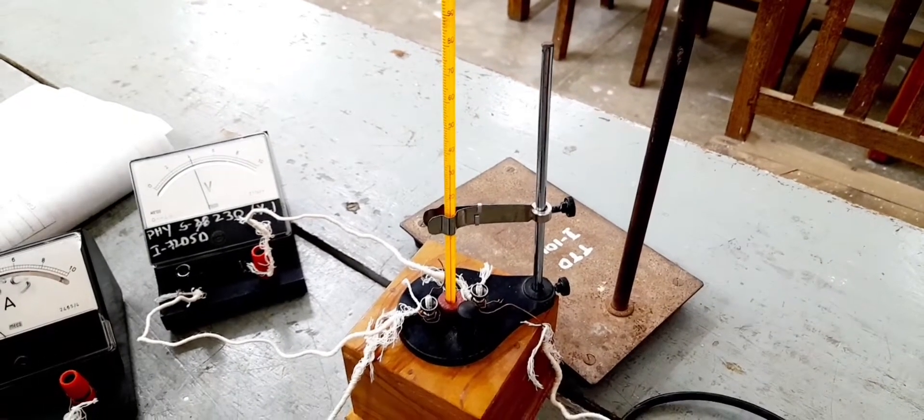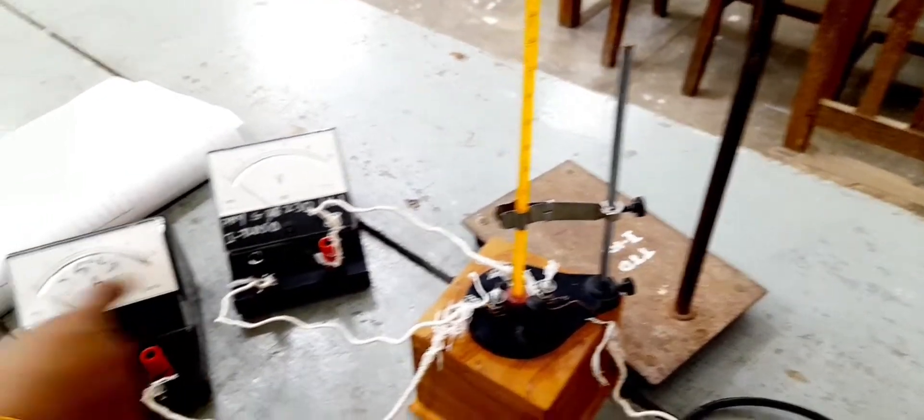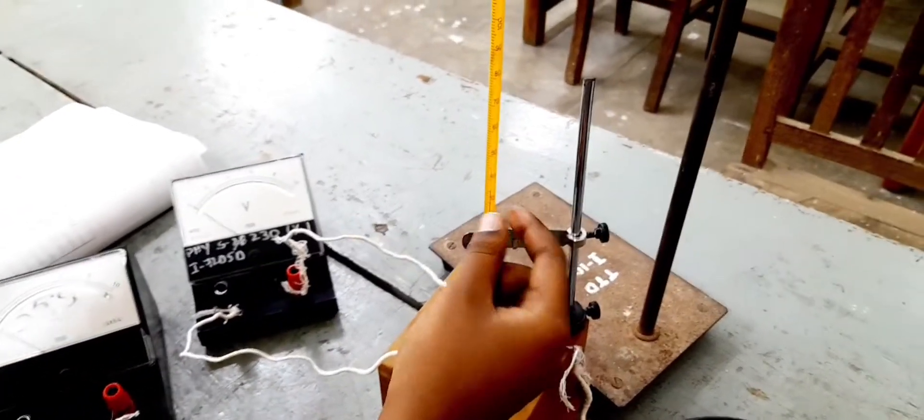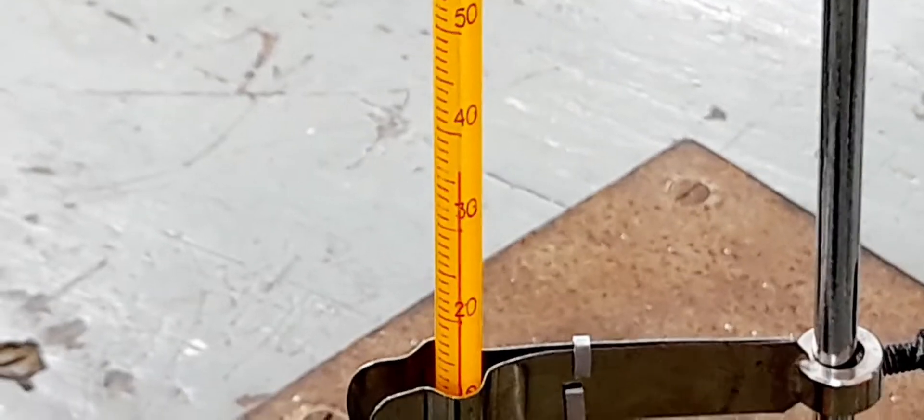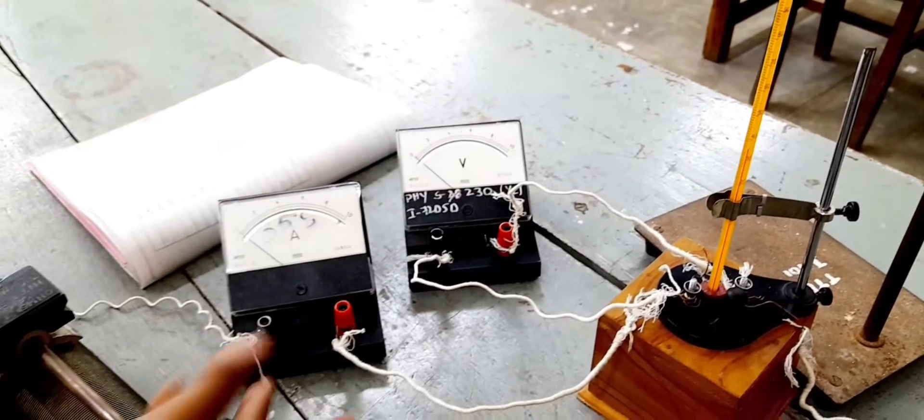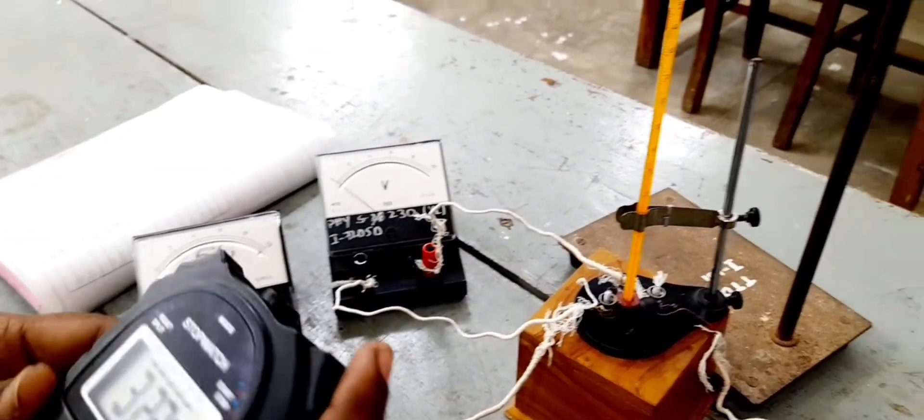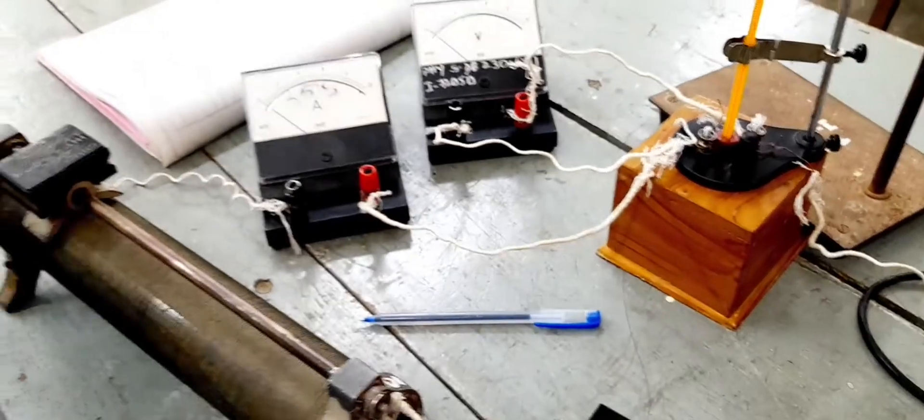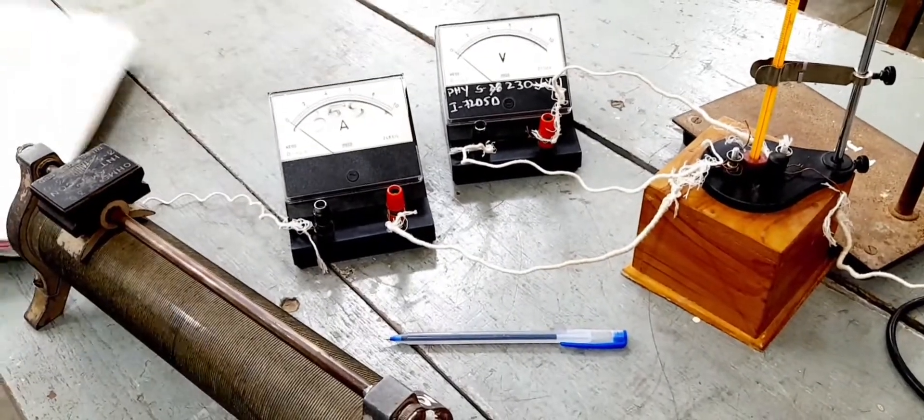When we switch off the battery eliminator, it is decreasing in the temperature from 35.2 to 34.5 degrees and increasing in the time. It shows the ammeter current 0 amperes and voltage 0. After taking the values, we note it in the table like this.